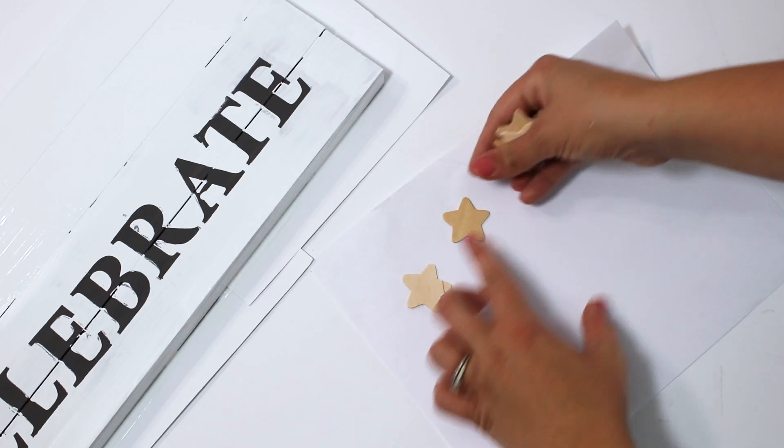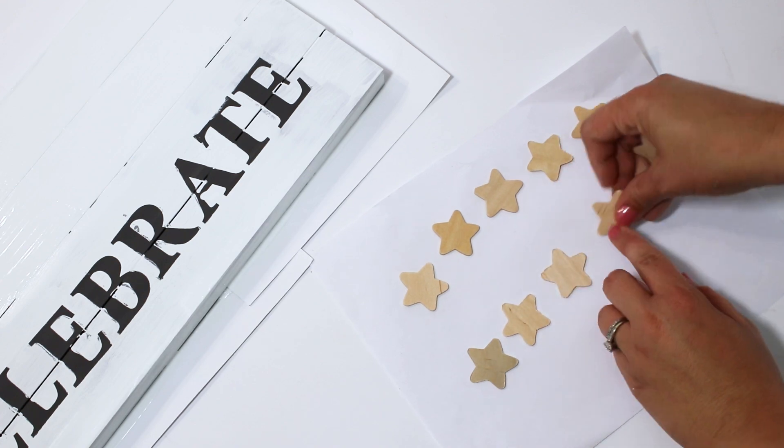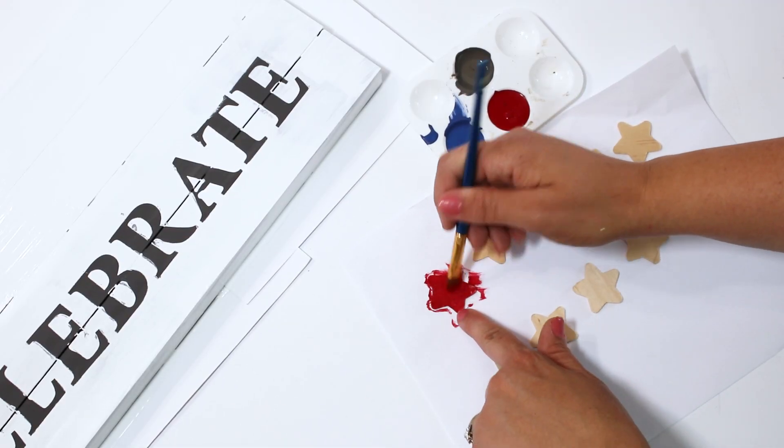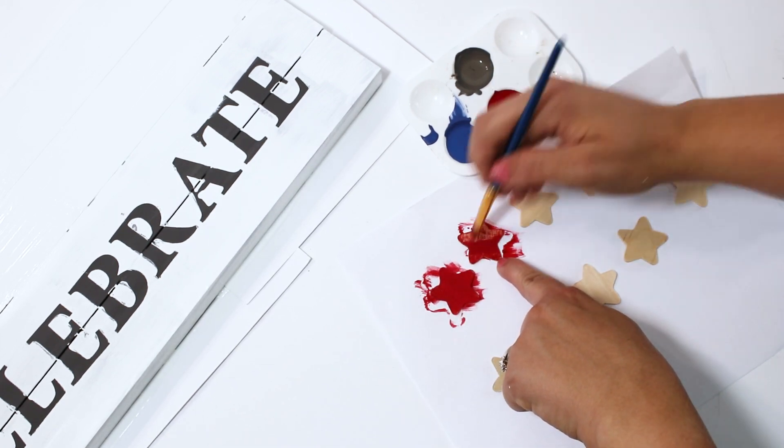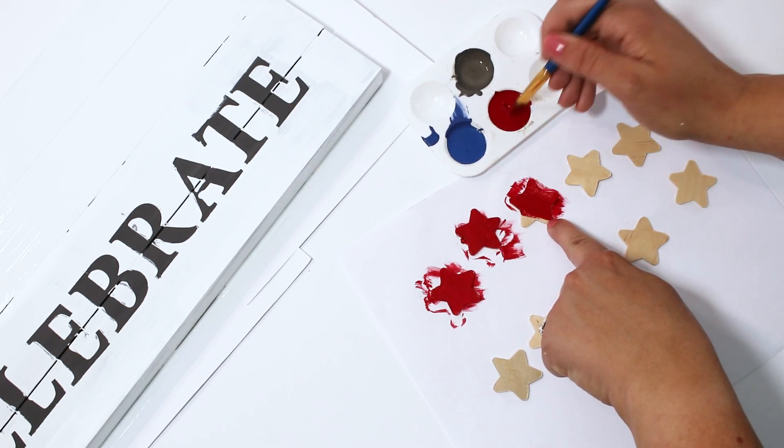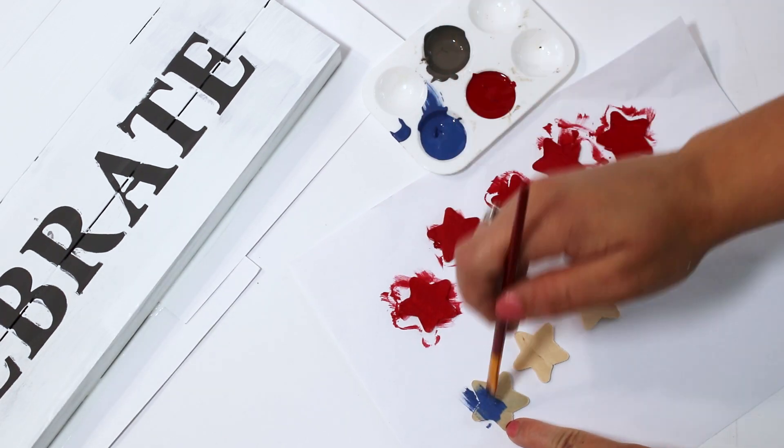I'm going to be using some more of my wooden stars from that large pack from Hobby Lobby. So I'm excited to get some more use out of those. I ended up painting five red stars and five blue stars. And once again, I didn't need all of these, but it was just way easier to paint too many than to have to go back and get out all of my paints again after everything had dried and I had cleaned out my brushes.